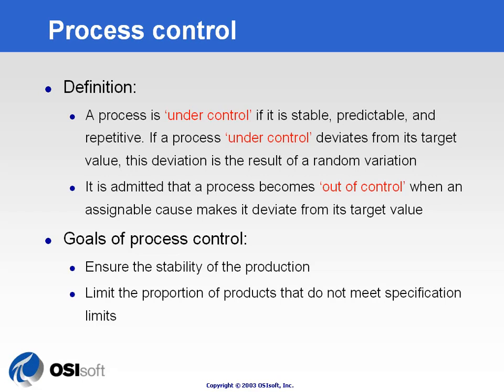So in the end, the goal of process control is to ensure the stability of the production and to reduce as much as possible the ratio of rejects — bad product being made by the process.